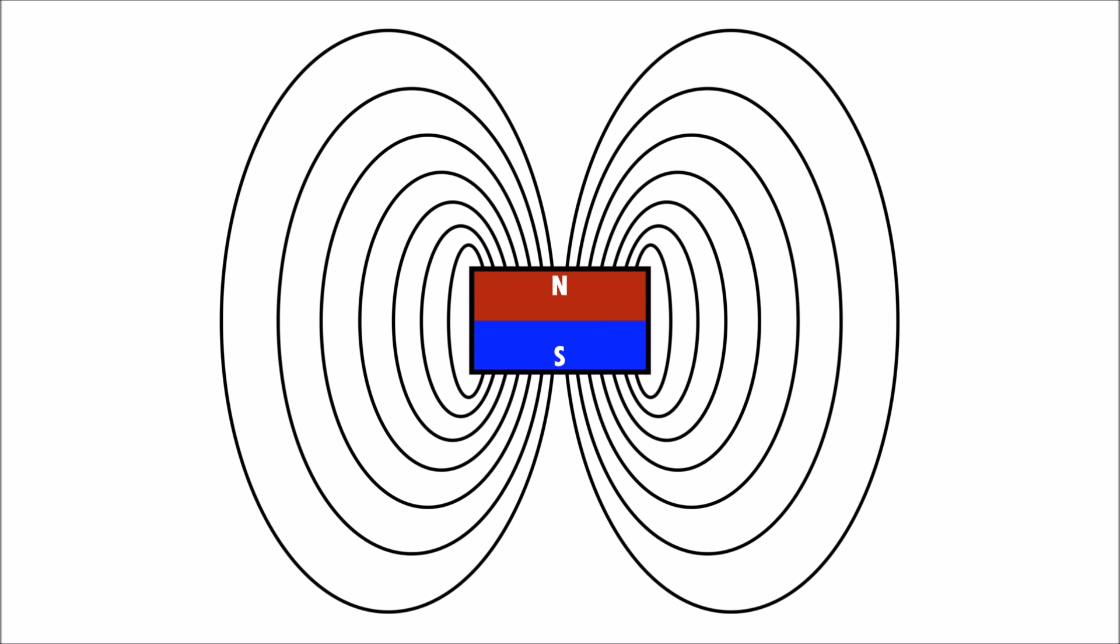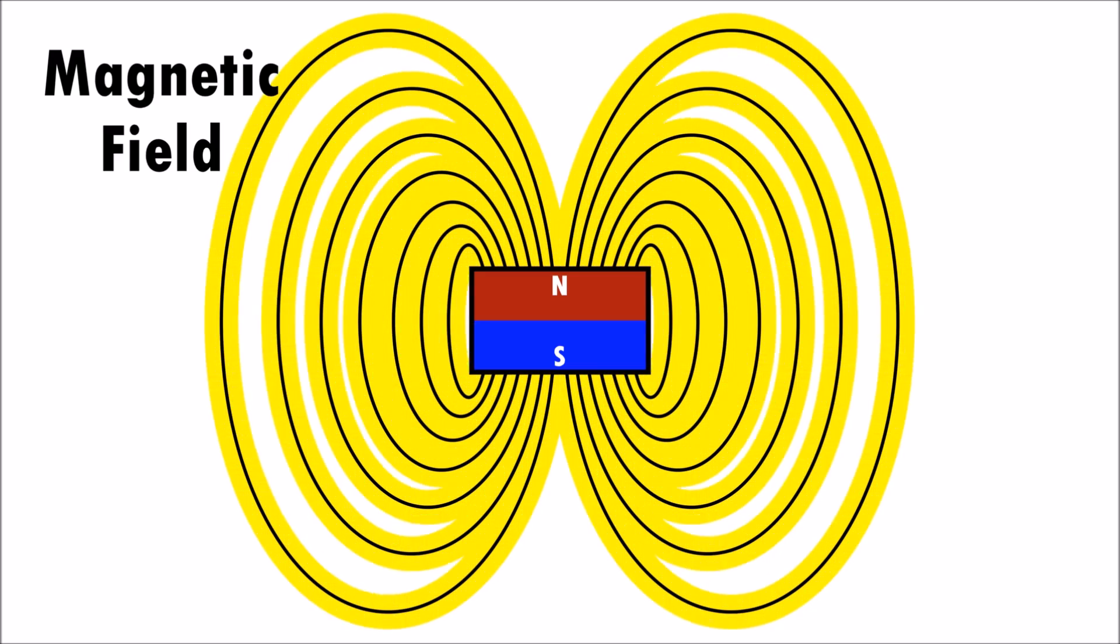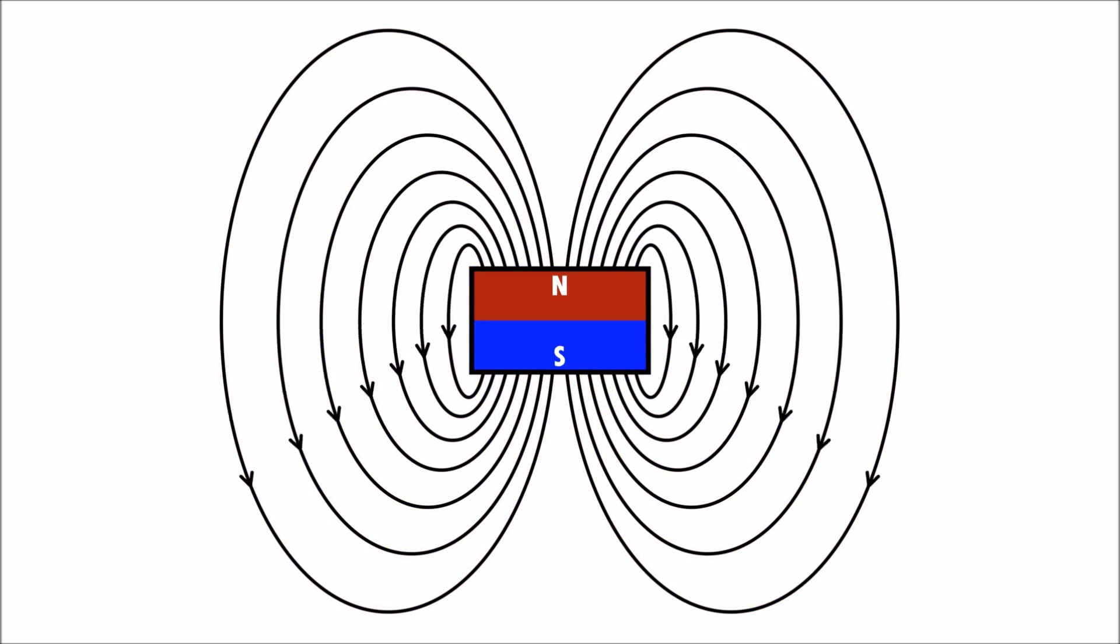Magnets have an invisible force called a magnetic field that moves around the magnets. Magnetic field lines move from the north pole to the south pole in a loop.